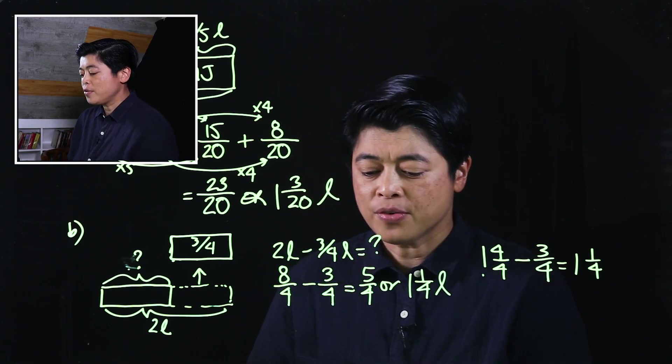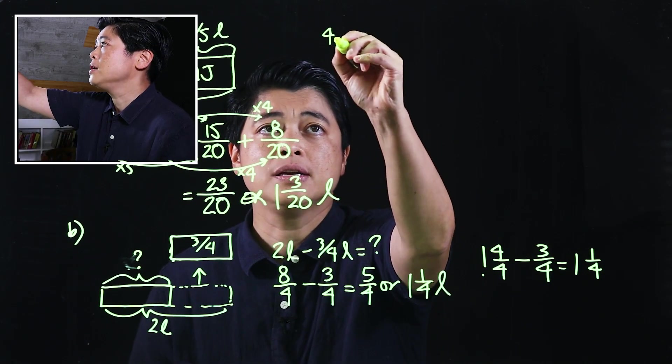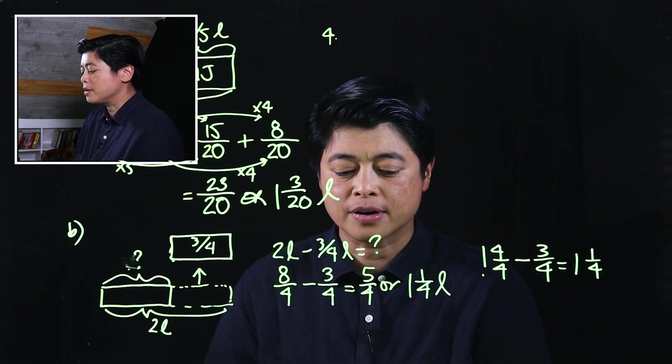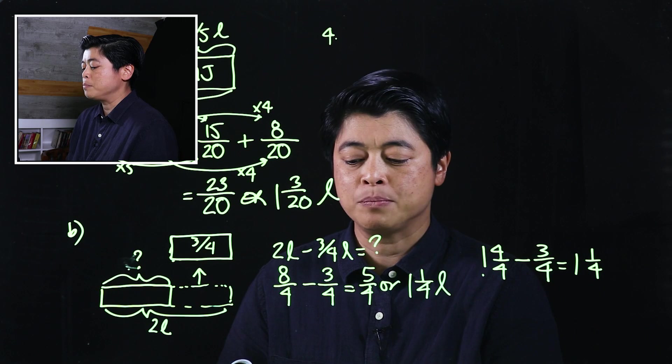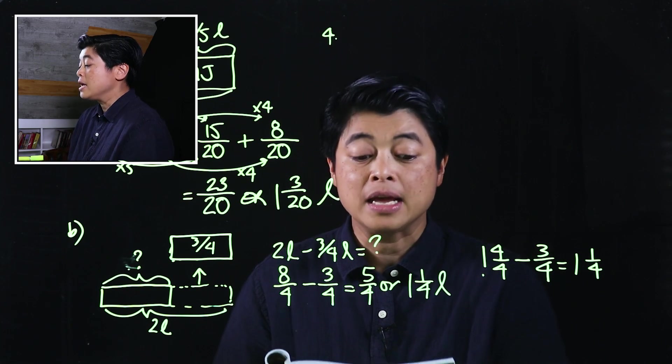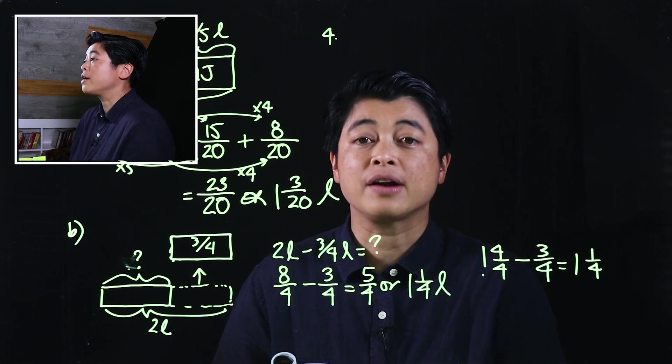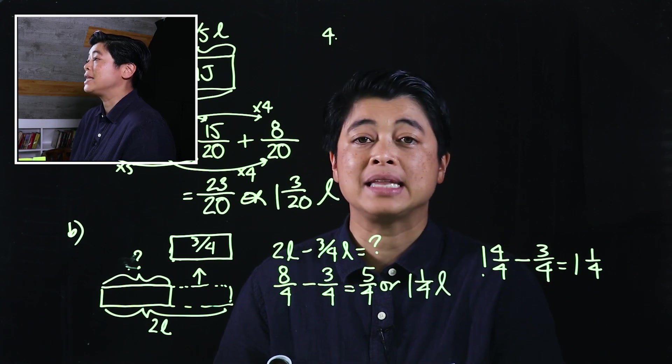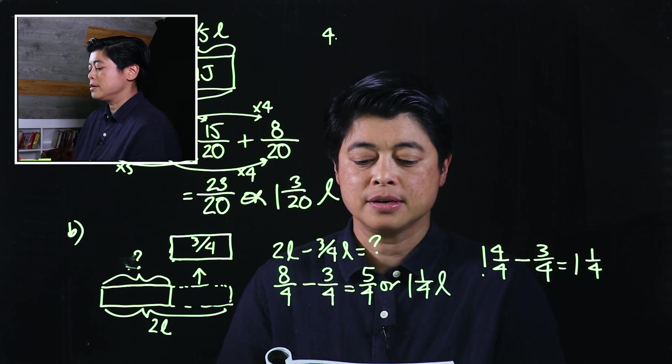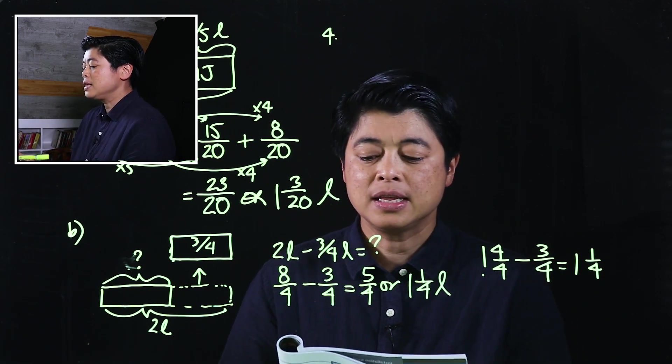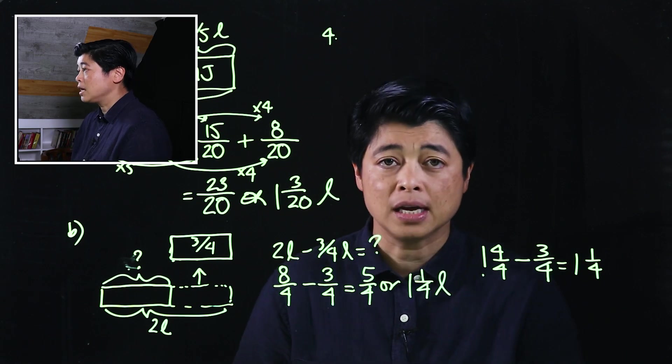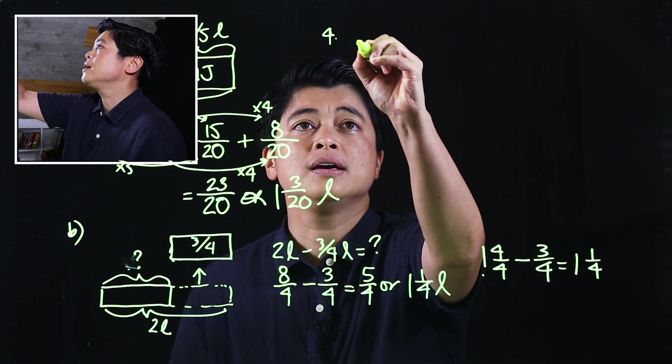Another example will be number four. In number four it says in a cooking competition, Madam City used 7/10 kilograms of curry powder. Then it says Madam Nor used 1/5 kilograms less curry powder than Madam City. So clearly this is a compare model. This is a two-step bar model.